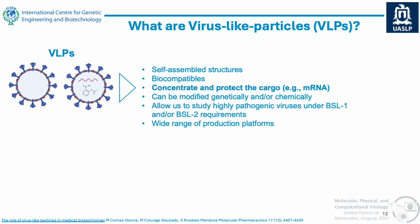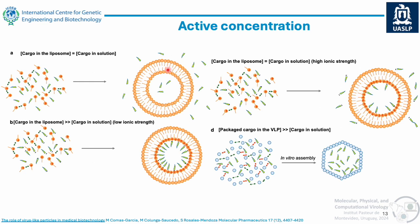VLPs have the ability to concentrate and protect their cargo. With liposomes, the concentration of the cargo inside is in equilibrium with the outside and follows chemical potential laws from thermodynamics. You can sometimes favor increased cargo through electrostatic interactions with the inner phospholipid layer, but increasing ionic strength disfavors this. Unlike liposomes, VLPs allow us to increase cargo concentration because we can establish very strong protein-RNA or protein-cargo interactions.